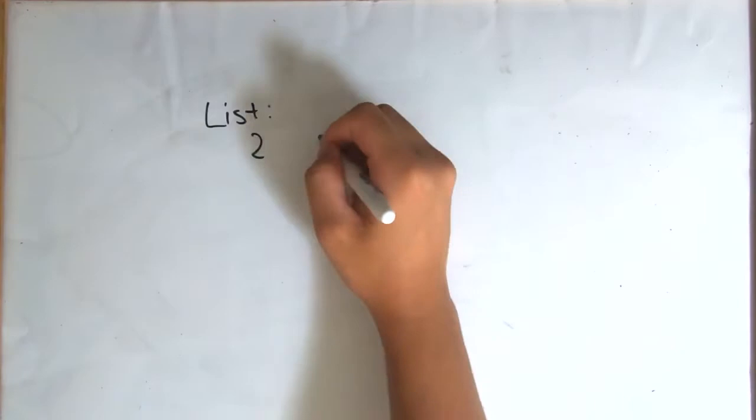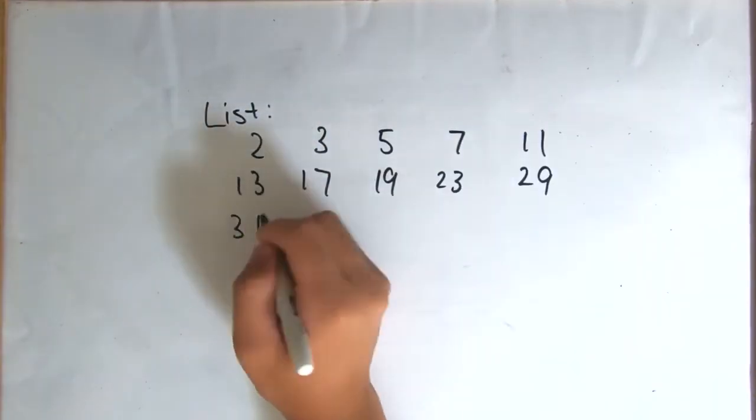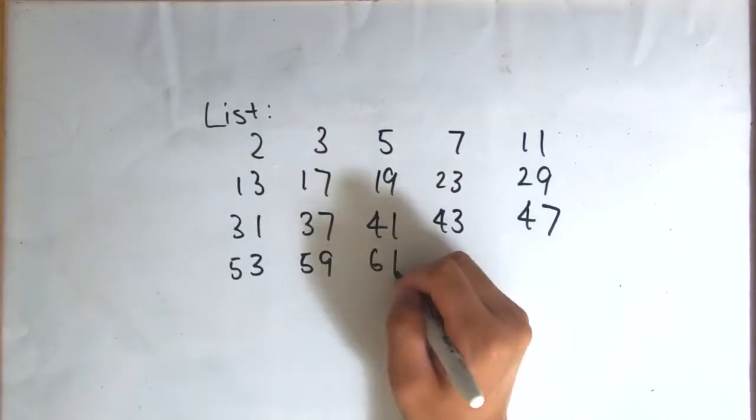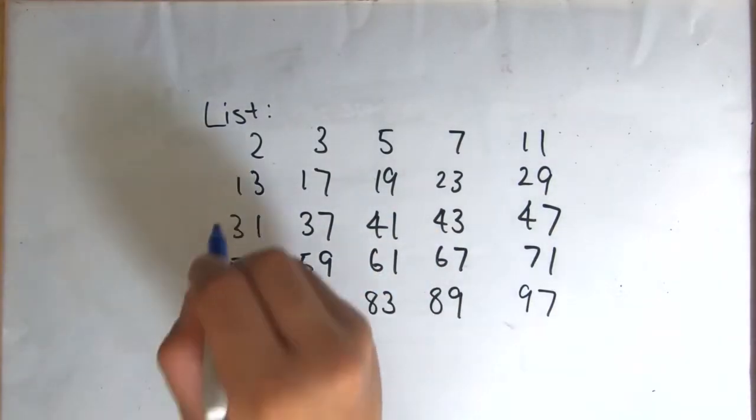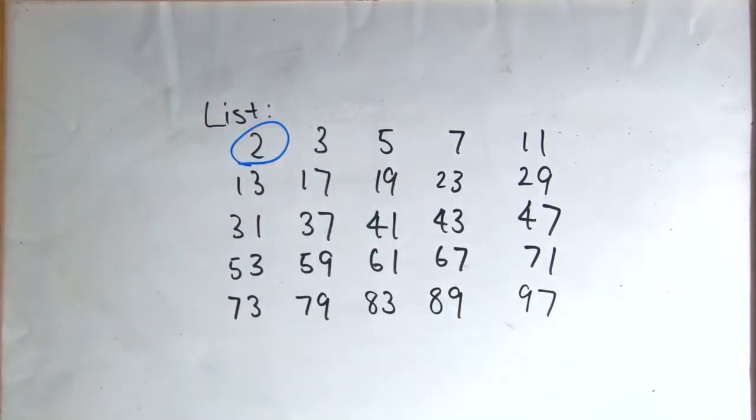Say you are given a list of numbers sorted in an ascending order like the following. Your task is to look at the list and see if a certain number exists in the list or not. Let's say the number 2, placed right here, or the number 73, placed right here.